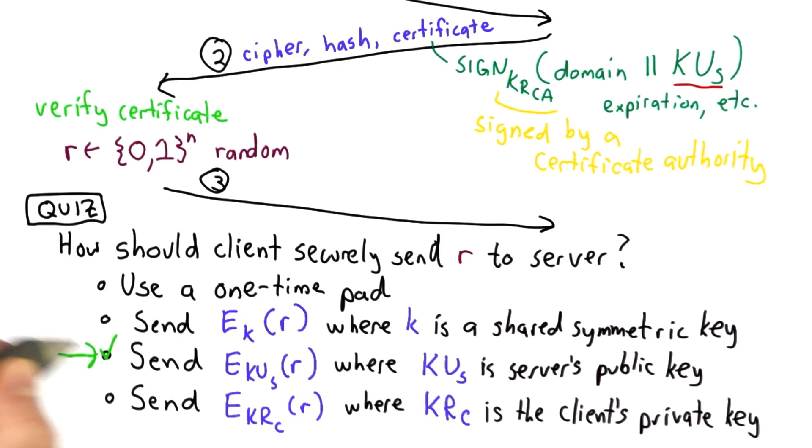The answer is the third choice, that the client should send the random value encrypted using the server's public key. Both of the first two options assume that the client and server already share a symmetric key.